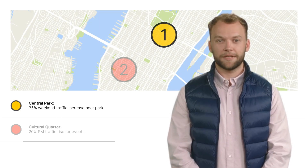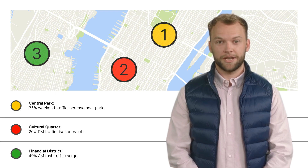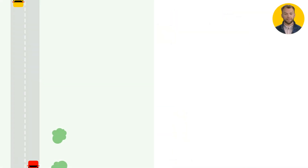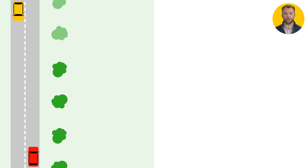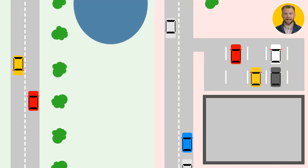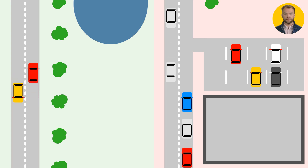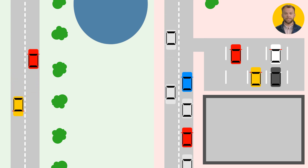A TIA uses traffic maps and data to help us predict future changes and adapt to them. Here's an example. On the left, we see our current traffic flow. The image on the right predicts the situation after the business complex opens. Notice the changes?